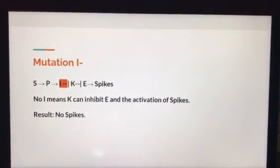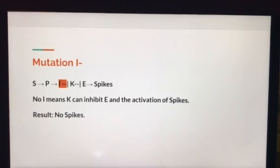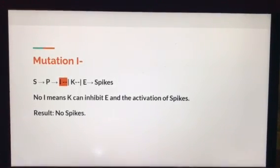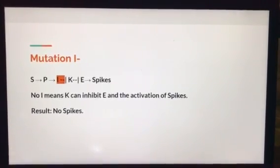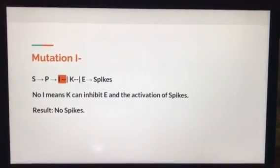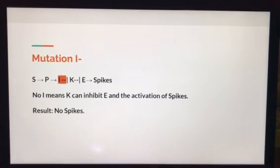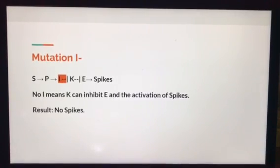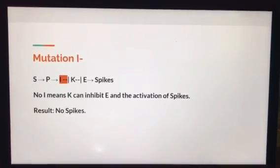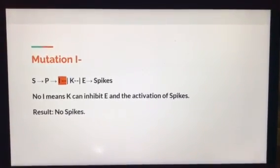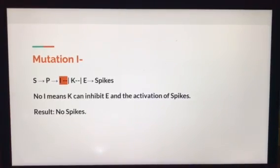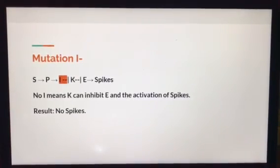Our second mutation is on I. When I is not produced, it still allows K to be produced, which can inhibit E and the activation of spikes, just like before. The result would be no spikes.